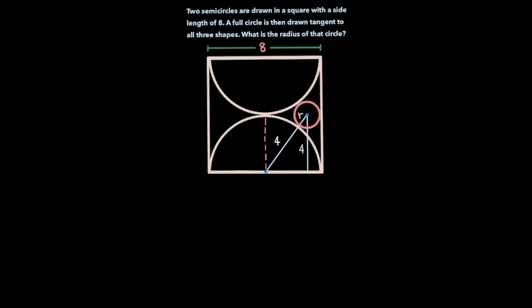Notice that we've formed a right triangle here. We know the length of the hypotenuse of this right triangle is 4 plus r, and that the length of the longer leg is 4. Now let's try to find an expression for the length of the shorter leg, so we can ultimately apply the Pythagorean theorem to find r, the radius of the pink circle.